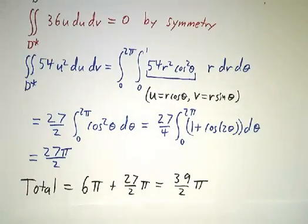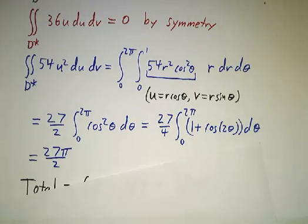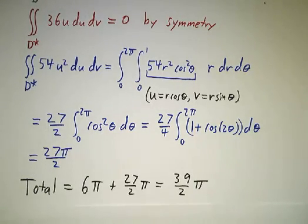When we add that to our 6 pi that we had earlier, we get a total of 39 pi over 2, and that's our final answer.